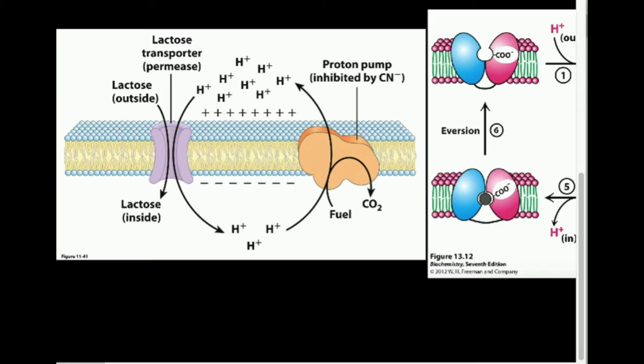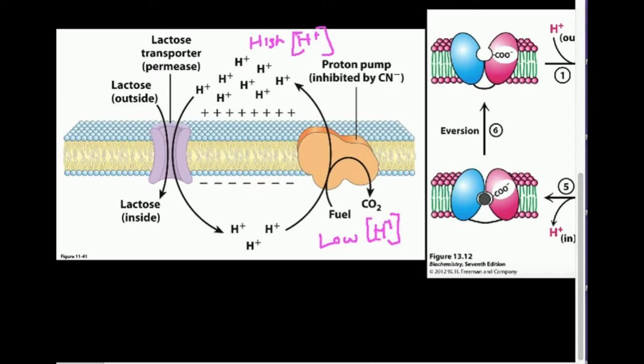So one thing I want to point out here is that on this side, which is the outside, there is a high concentration of hydrogen ions. Down here there is a low concentration of hydrogen ions. So this proton pump, what does it do? Well, hydrogen ions would not spontaneously flow from the inside here to the outside because that's against the concentration gradient.